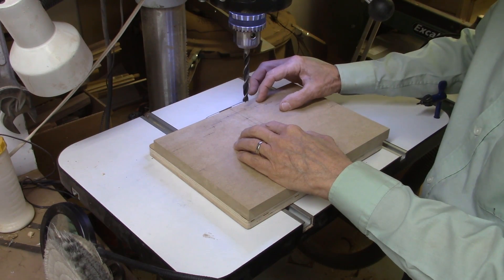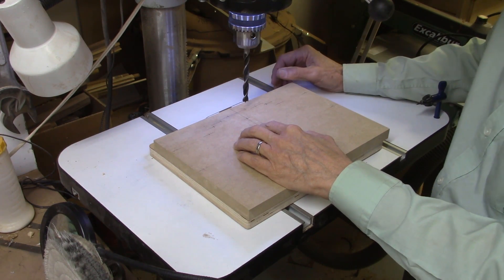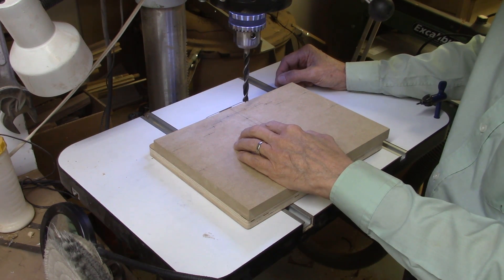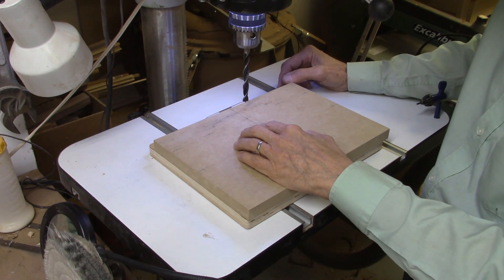So the twenty-five sixty-fourth inch bit is the bit you want to use for drilling these holes for the screw insert. So again, I have my center point marked, I line it up and start my drilling.